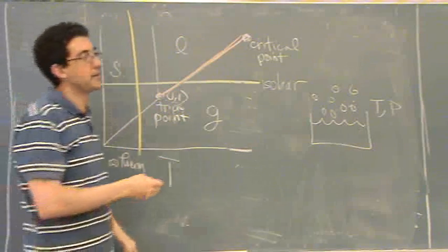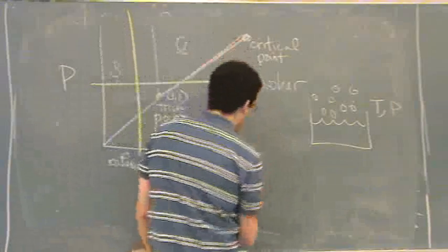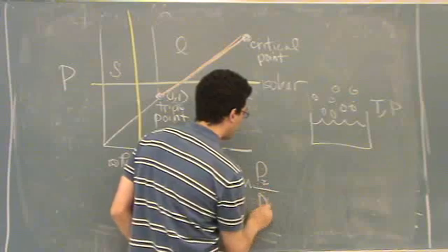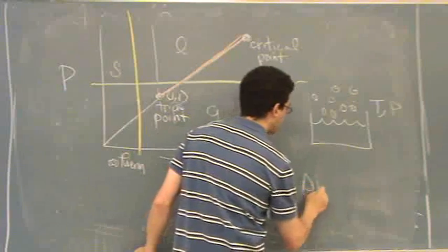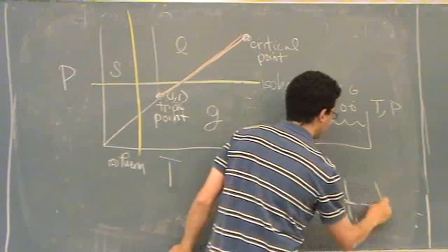So when you're doing Clausius-Clapeyron, remember you have this equation. That's ln P2 over P1, delta H over R, one over T1 minus one over T2.